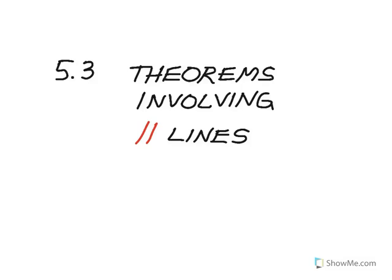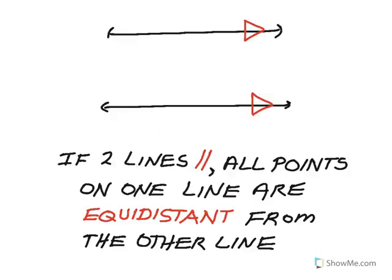This lesson, 5.3, is about some miscellaneous theorems involving parallel lines. This first theorem just seems like a no-brainer: if two lines are parallel, then all points on one line are equidistant from the other line.